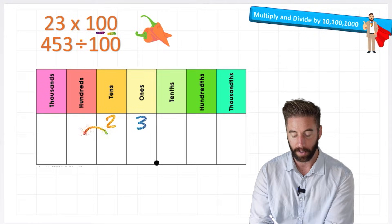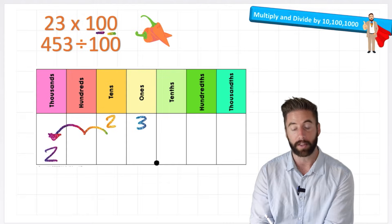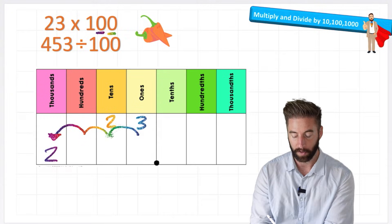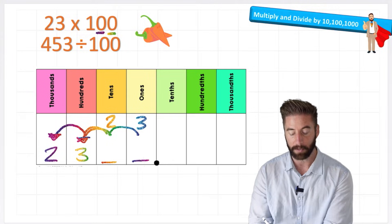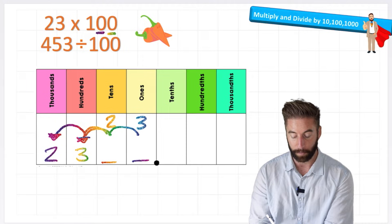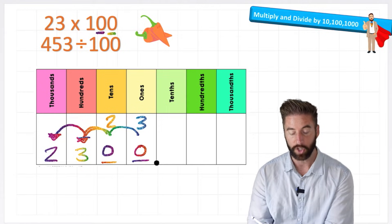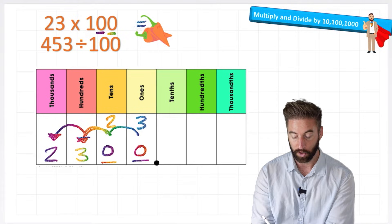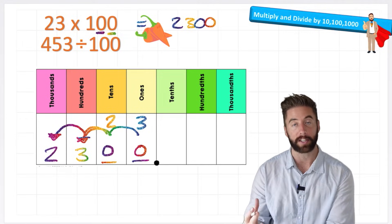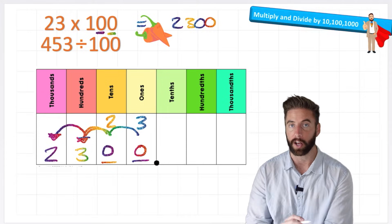So my 2 moves one, two into the thousands column, and my 3 also moves one, two into my hundreds column. Now remember, we've got some blank spaces here before my decimal, so now I need to fill them with placeholders or zeros. So the answer to 23 times 100 equals 2,300, because 2,300 is 100 times larger than 23.